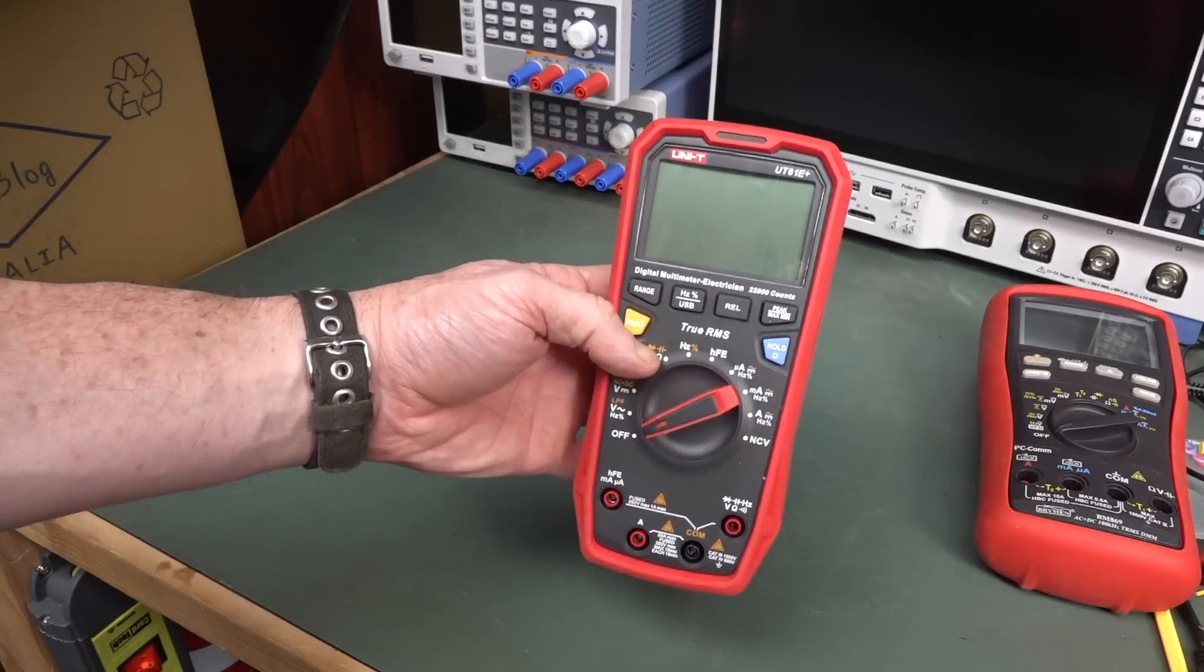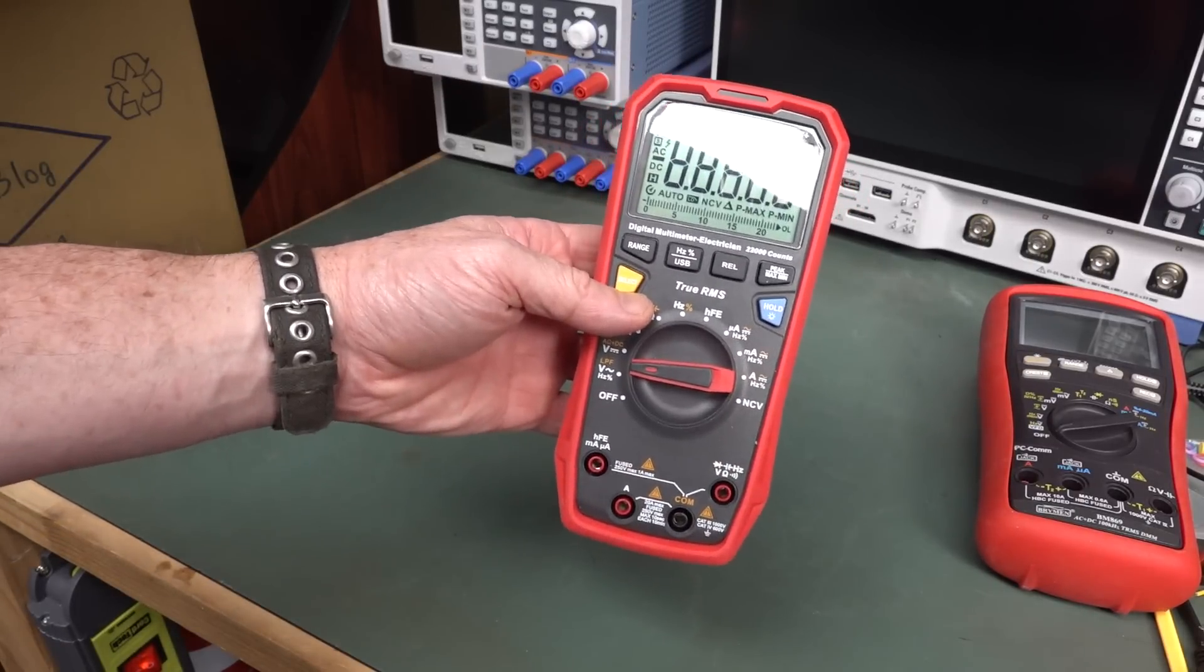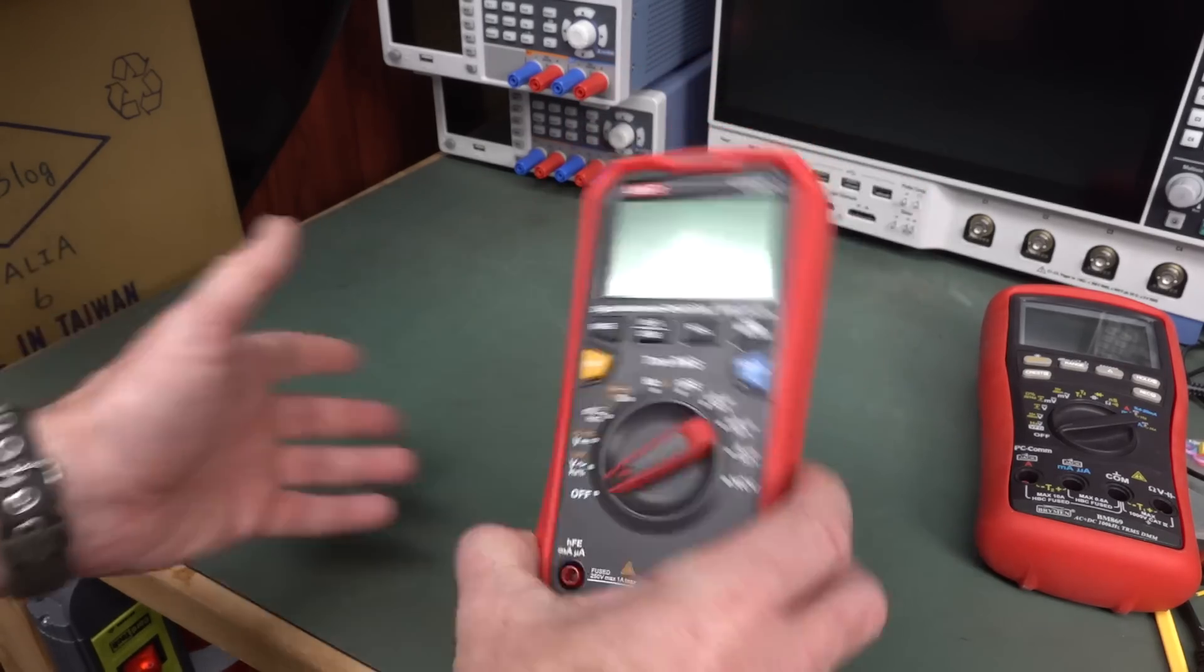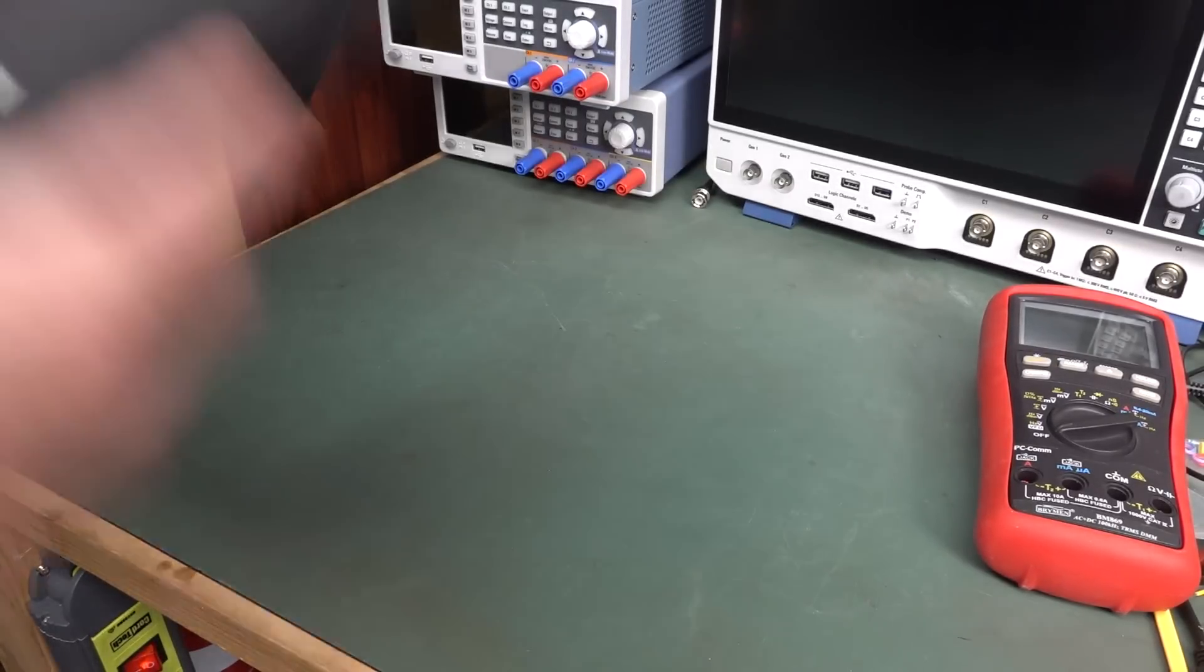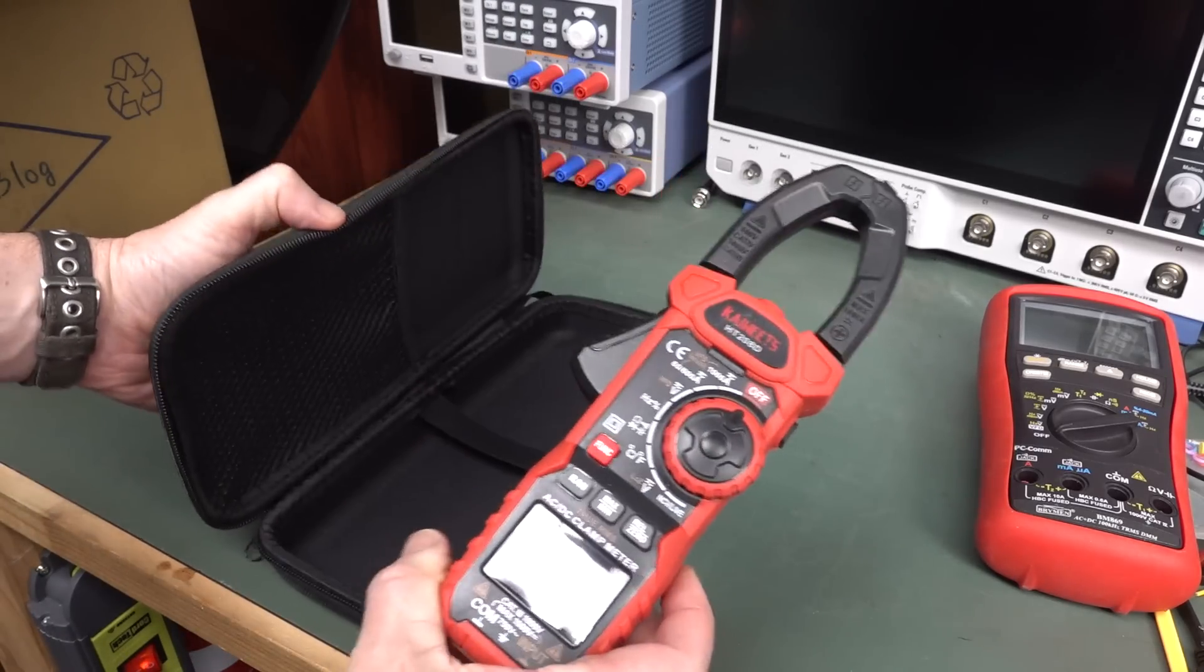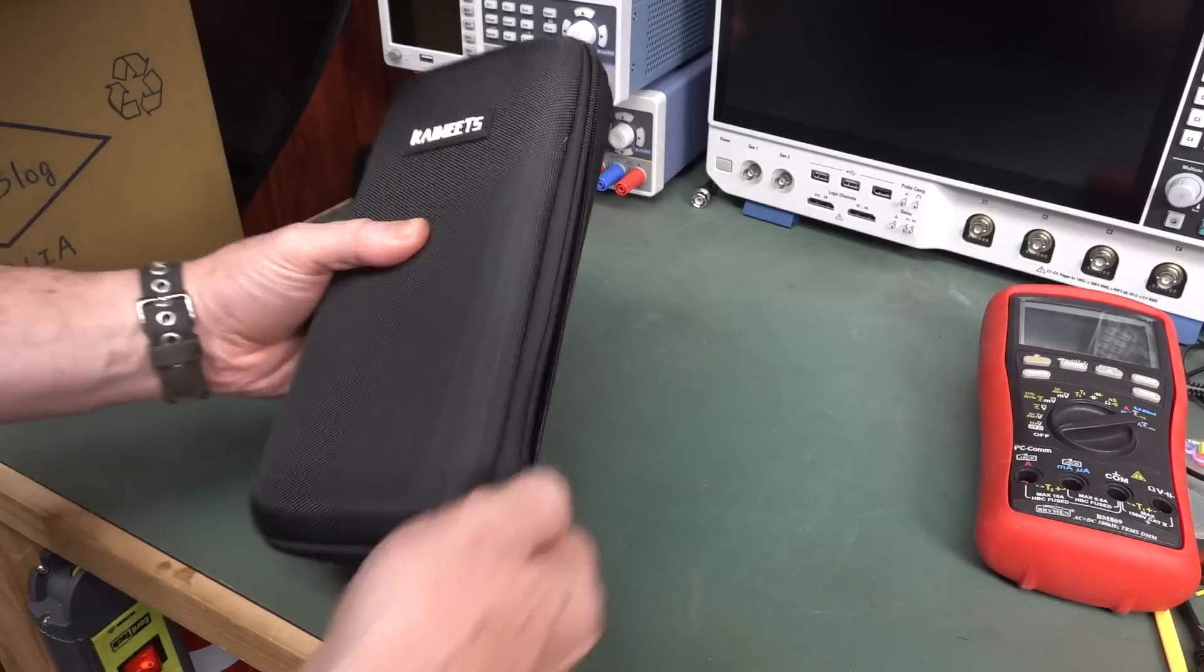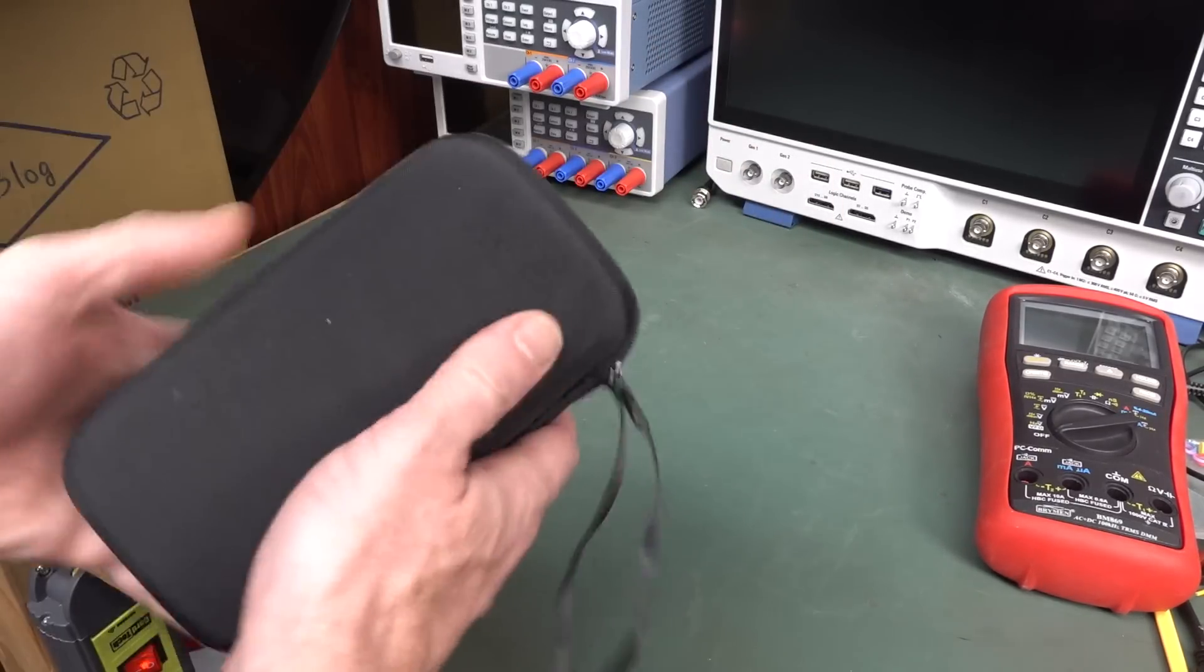I've got a Uni-T, a UT61E+. I've done a video on that, and it's still a reasonable choice for whatever, 40 bucks, 50 bucks, or whatever it is. There's the Uni-T. Kaiweets. This could be one of many. Oh, it's the clamp meter. This box will contain lots of mailbag stuff.